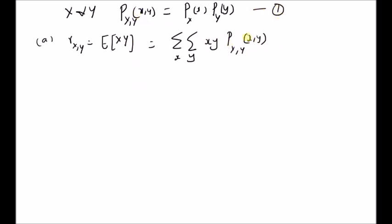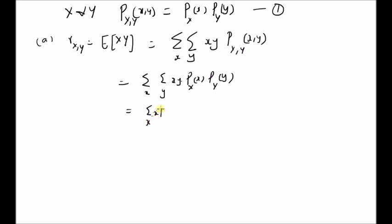Since from the independence condition, the joint probability mass function is equal to the product of the two respective marginal probability mass functions, we can rewrite this definition as a summation over x and y of x times y times the product of the individual marginal PMFs. Since the two PMFs are independent, we can write this double summation as a product of two individual summations: the sum of x times p_x(x), multiplied by the sum of y times p_y(y), which is equal to the expectation of x multiplied by the expectation of y.